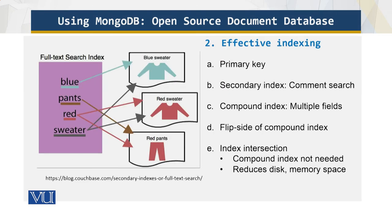Any database can store data, but retrieving it quickly and effectively is something very different. In traditional relational databases, we use the concept of the primary key — a unique key by which every record is uniquely identified and can be fetched. This primary key concept works well in financial, inventory, and school or university environments.